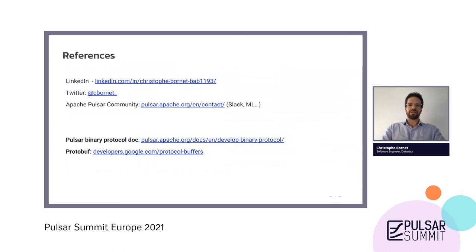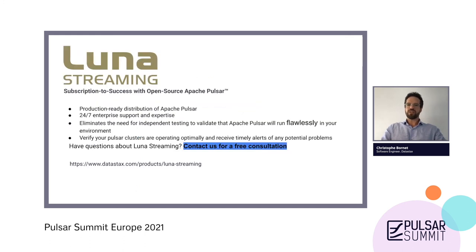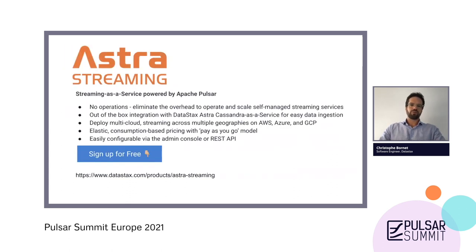Some references about this talk — here is my contact information where you can reach me. I'm available on LinkedIn and Twitter. I'm also active in the Apache Pulsar community on Slack and on the mailing list. If you want more information about the binary protocol, please go to the Apache Pulsar documentation. For information about protocol buffers, there is documentation on the Google website. I'm personally working on an offer called Luna Streaming, which is enterprise support for Apache Pulsar. We also have a streaming-as-a-service offer you can run on any cloud, and you can get some free credits just by signing up.